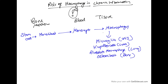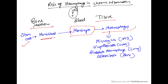Now let us look at the role of macrophages in chronic inflammation. First, what are macrophages and how are they produced? In the bone marrow, stem cells convert into monoblasts. In the blood they convert into monocytes, and monocytes in the tissue convert into macrophages. Macrophages are named differently by location: microglia in the CNS, Kupffer cells in the liver, alveolar macrophages in the lung, and osteoclasts in bone. So the pathway is: bone marrow → blood → monocyte → macrophage.